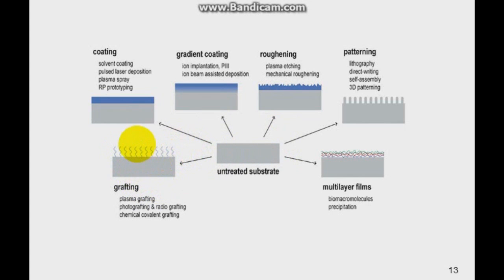Or you can do coating, you can do gradient coating, you can roughen up the surface doing surface roughening, or you can create a specific pattern on the surface using patterning, or you can add multi-layer films on the surface. For today's topic, we're just going to focus only on the patterning part of surface modification.